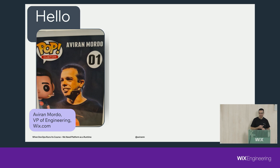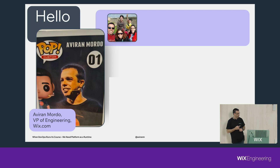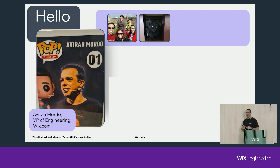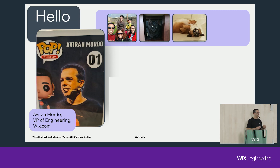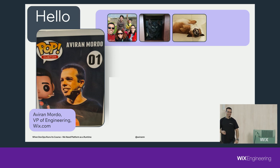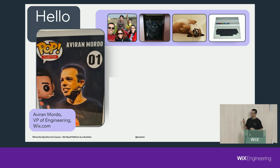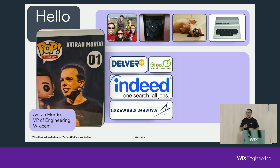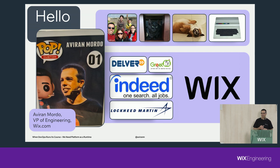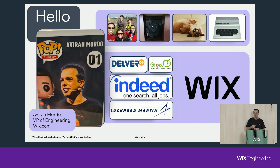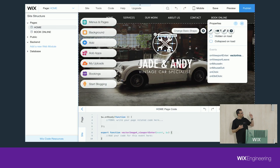I'm Aviran, VP of Engineering for Wix.com. Married with three children, happily. I have a cat and a dog - this is a separation of concerns, they don't get near each other. This is my first computer - a Dragon 64 with 64 kilobytes of memory. I worked in many companies throughout my career, from startups to huge corporations, and eventually ended up here at Wix.